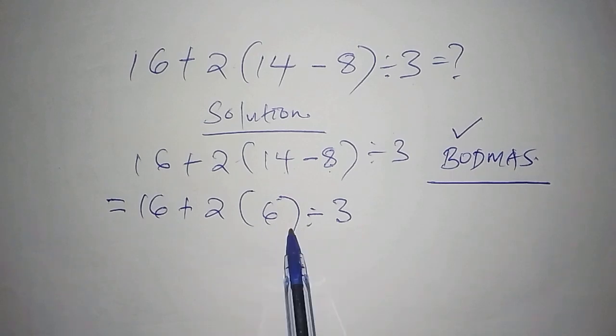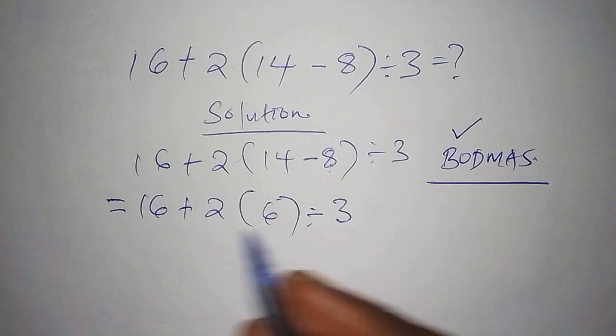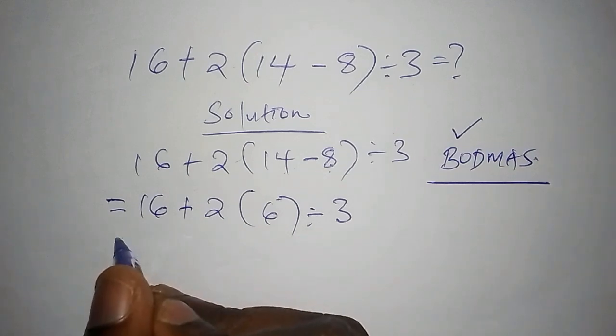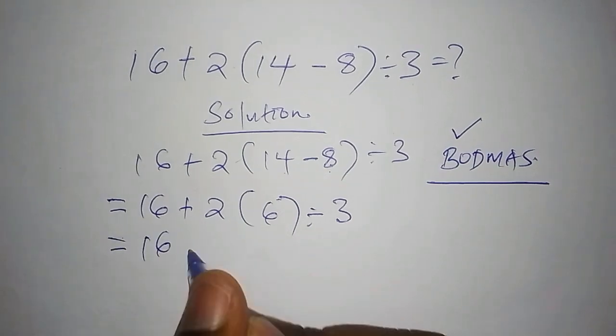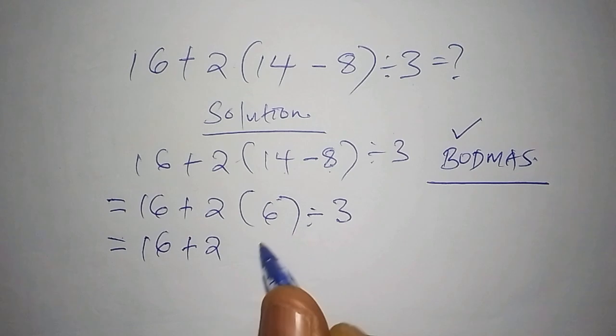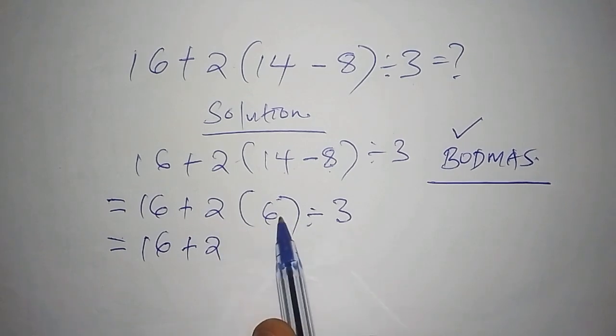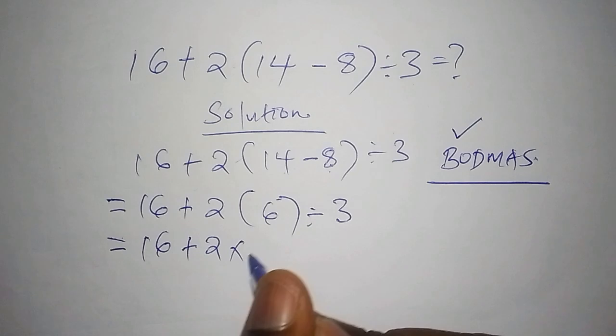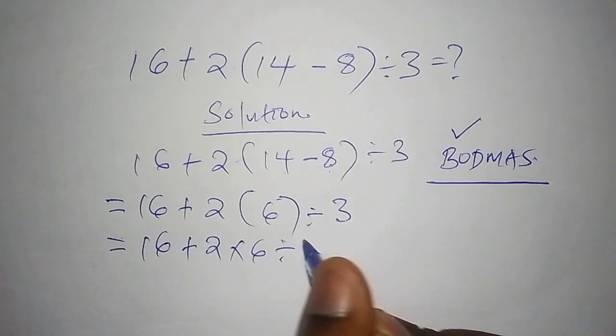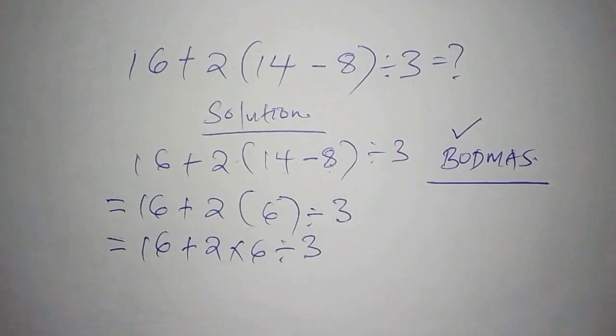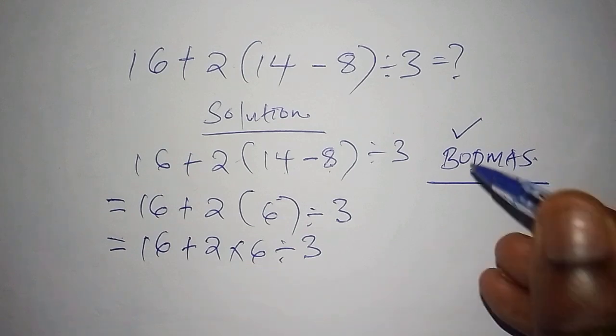We still have the number inside the bracket so we need to work it out first, meaning we are still within BODMAS. This is equals to 16 add to 2. For us to open the bracket we need to multiply the number inside, so multiply by 6 then divide by 3. The next step, we are now through with brackets and moving to D which stands for division.